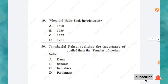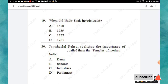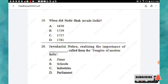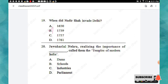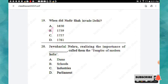Question 19: When did Nadir Shah invade Delhi? Options: 1650, 1739, 1757, 1761. The right answer is option B: 1739. Question 20: Jawaharlal Nehru, realizing the importance of ___, called them the temples of modern India. Options: dams, schools, industries, parliament. The right answer is option A: dams.